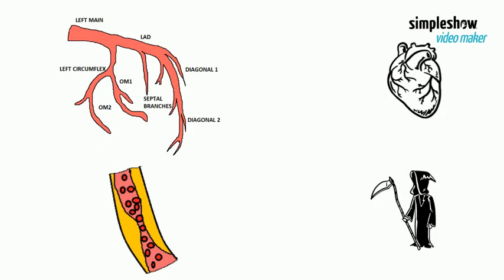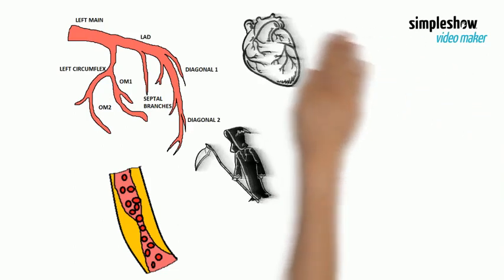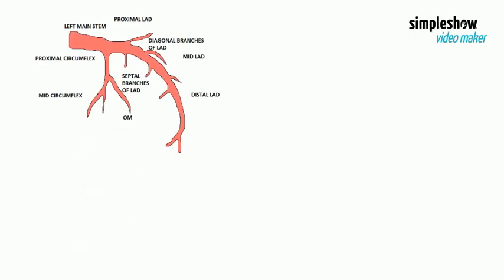The blockage that kills is made up of platelets streaming to a small plaque. Even a small amount of plaque in this area can rupture and cause death.